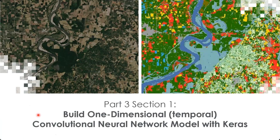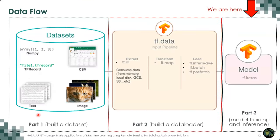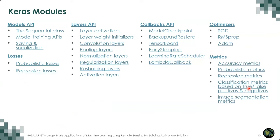We're going to focus on a couple of TensorFlow modules that are helpful here: Keras and TensorBoard. Keras is what helps us really build the model and train it — it does the heavy lifting for us. As a reminder of the process: in Part 1 we built the data set, in Part 2 we built the data loader that feeds model training, and in this part we're focused on training the model and then testing it with inference. Keras has a lot of modules — it's a high-level interface to TensorFlow, but it also has flexibility to define custom layers, loss functions, metrics, and callbacks.